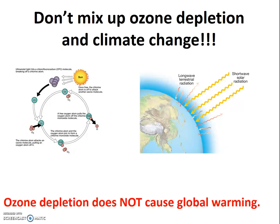Rather, the increased tropospheric temperatures result from heat not being able to escape due to an increase in heat-absorbing greenhouse gases. The largest percentage of these anthropogenic greenhouse gases are due to the burning of fossil fuels. Thus, global warming — also known as climate change — is caused by anthropogenic greenhouse gases: the human-generated greenhouse gases being emitted into the atmosphere, primarily due to our burning of fossil fuels.